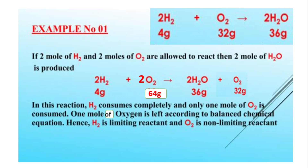Students, aapko kaise pata chala? Hydrogen ke 2 moles sirf 1 mol oxygen ke saath react karte hain. Agar aap theoretically balanced equation likhein: 2H₂ + O₂ → 2H₂O, is mein stoichiometric amounts use hui hain aur balanced chemical equation mein koi limiting reactant nahi hota. Isliye maine kaha tha ke jab bhi limiting reactant ki example denge toh balanced equation nahi likhenge. Reactor side par bhi aur product side par bhi oxygen hai, matlab oxygen excess mein maujood hai.